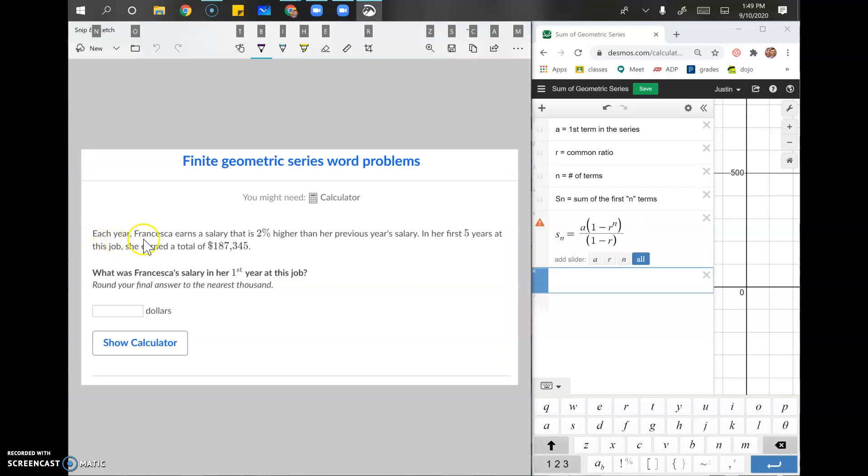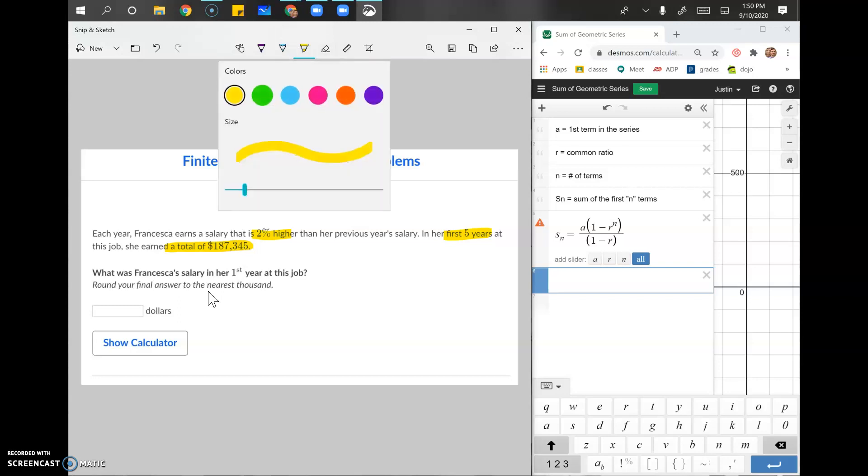Okay. Question 2. Each year, Francisca earns a salary that is 2% higher than the previous year's salary. In her first five years at this job, she earned a total of $187,345. What was Francesca's salary in her first year at this job? First year at this job. Okay. We know what we've highlighted, what we know. We highlighted what we don't know. Let's start with what we don't know.